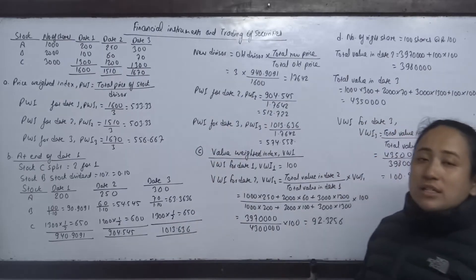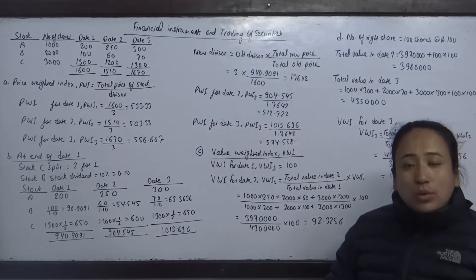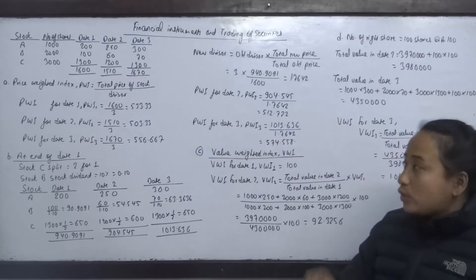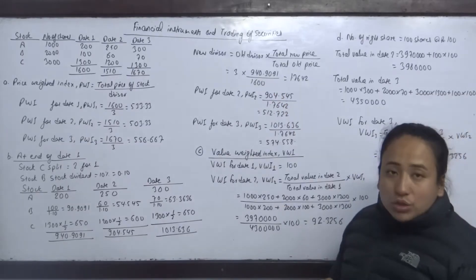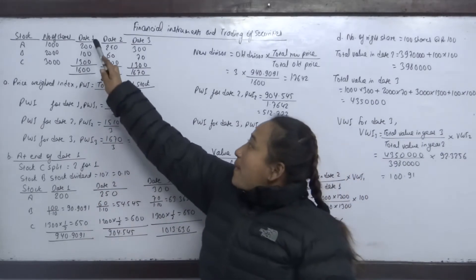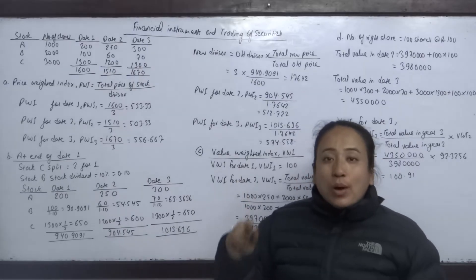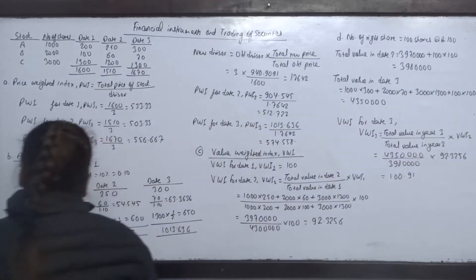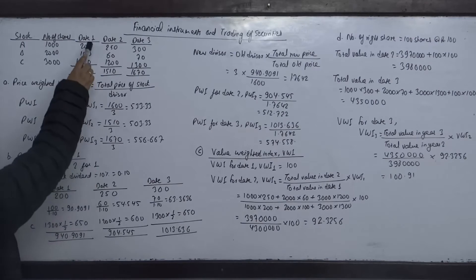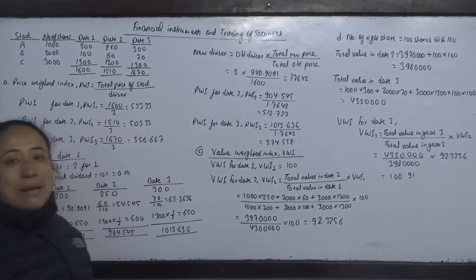The formula for the new divisor is: old divisor multiplied by (total new price divided by total old price). The old divisor is 3, and the new adjusted total price is 940.9091, while the old Date 1 total price is 1,600. This gives a new divisor of approximately 1.7642.